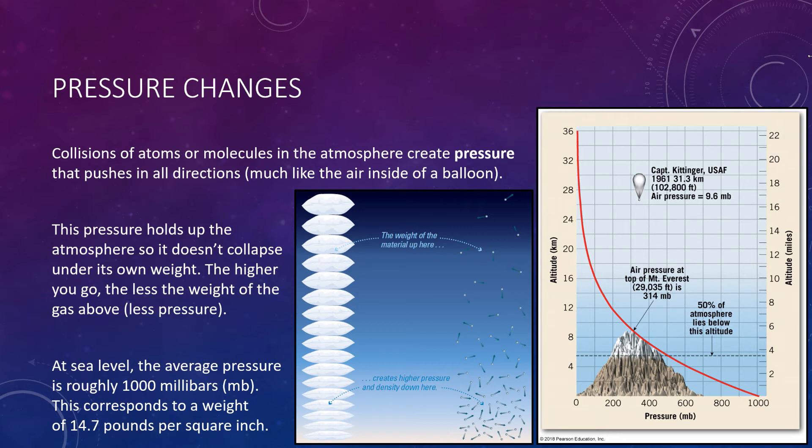Collisions of individual atoms or molecules in an atmosphere create pressure that pushes in all directions, much like the air inside of a balloon. A balloon offers a good example of how pressure works in a gas. The air's molecules inside a balloon exert a pressure pushing outward as they constantly collide with the balloon's inside surface. At the same time, outside air molecules collide with the balloon's outer surface, exerting a pressure that by itself would make the balloon collapse. A balloon stays inflated when the inward and outward pressures are balanced. This pressure holds up the atmosphere so that it does not collapse under its own weight. The higher you go in the atmosphere, the less the weight of the gas above, and thus the less weight means less pressure.